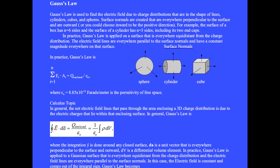In general, the net electric field lines passing through the area enclosing a 3D charge distribution are due to the electric charges within the enclosing surface. Gauss's law in general form is the closed surface integral of E dot dA, where dA is the differential area vector perpendicular to each local area element. The circle on the integral sign means integration is done around an entire surface enclosing a volume. Sometimes the enclosed charge is found by integrating a volume charge density, where dV is a differential volume element.